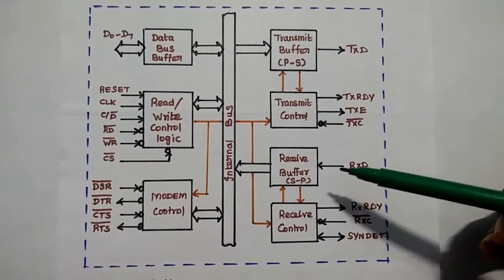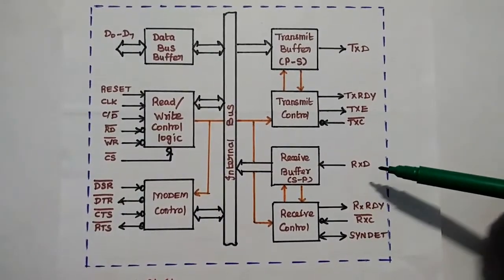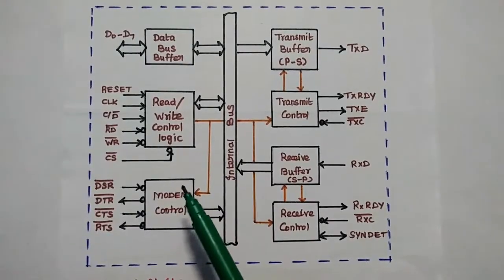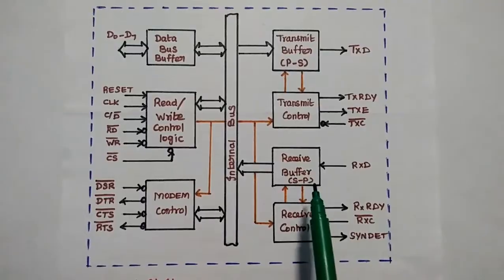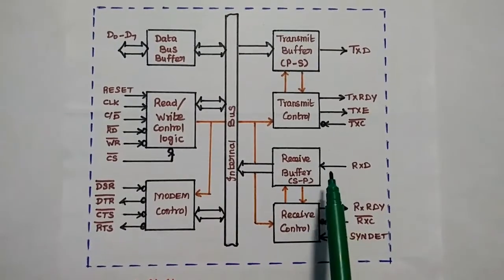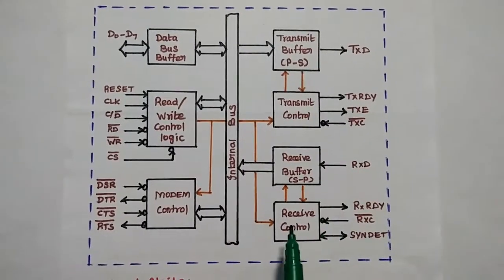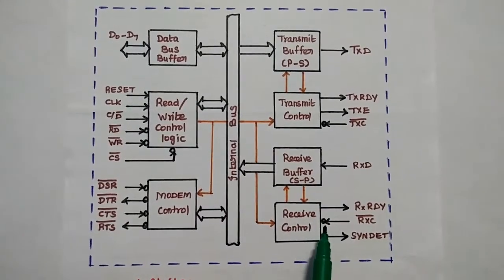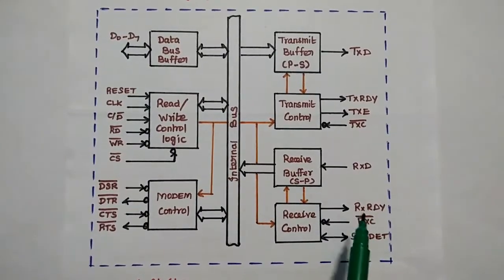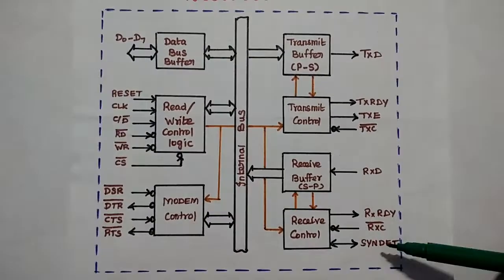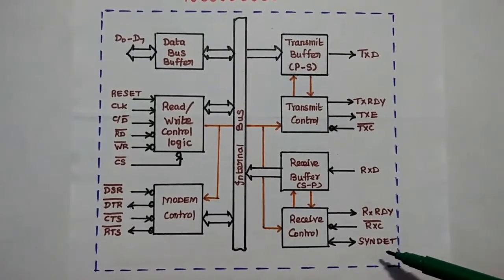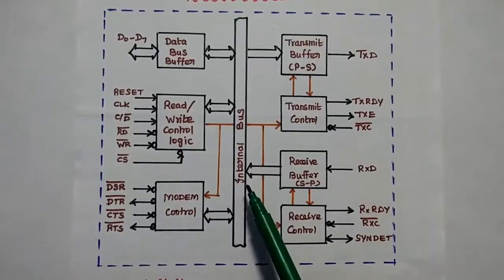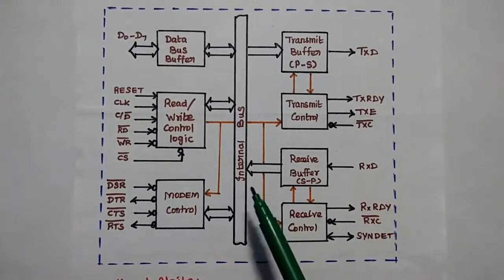The receive buffer receives serial data from the peripheral device and converts it into parallel data, which is then transmitted to the microprocessor. Serial-to-parallel conversion is done at this point, and data is received through the RxD pin. The receive control unit controls the operation of the receive buffer, with its own clock signal RXC and a receive ready signal. The synchronous detect signal is used to find synchronous characters during reception. The internal bus transfers data, command words, control words, and status information among the functional units.